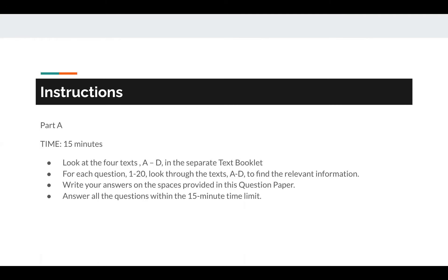At the very beginning, we're provided with a few instructions. Let's read through them. Part A, time: 15 minutes. Look at the four texts A to D in the separate text booklet. For each question 1 to 20, look through the texts A to D to find the relevant information. Write your answers on the spaces provided in this question paper. Answer all the questions within the 15 minute time limit.